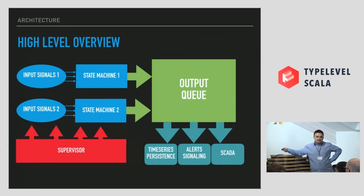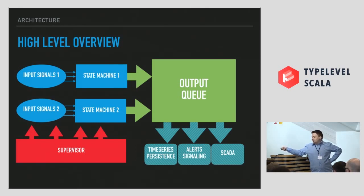Actors receive input from multiple sources — from sensors or from components that trigger commands. We have outputs that are pure specifications, and that output gets thrown into a queue of messages — a global queue of everything that happens in this system. We can pull from that queue and do persistence in time series. Complete decoupling: we don't have to sprinkle the code with database persistence. Database persistence is not the purpose of the state machines. We can trigger alert signaling, send emails, or send commands through SCADA — the protocol used in the industry.